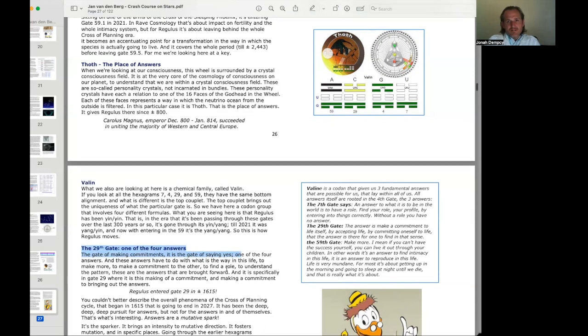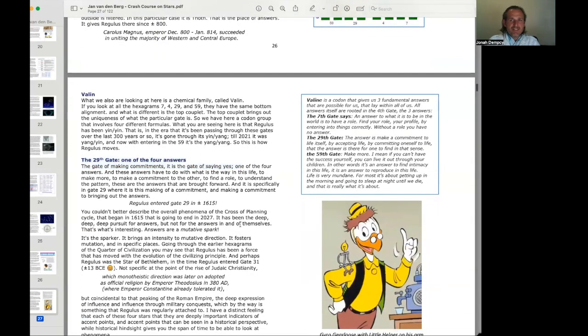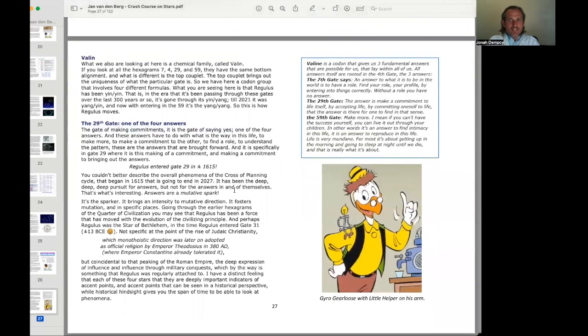The 29th gate, one of the four answers, the gate of making commitments. It's the gate of saying yes. These answers have to do with what is the way in this life to make more, to make a commitment to the other, to find a role, to understand the pattern. It is specifically in gate 29 where it is this making of a commitment, making a commitment to bringing out the answers.